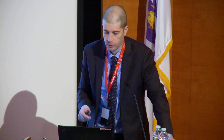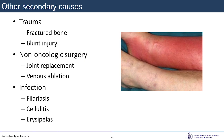Other causes of secondary lymphedema beyond breast cancer include trauma — seen after fractured bone, blunt injury, car accidents with pelvic injury even without fracture — and non-oncologic surgery including joint replacements, venous ablations, and varicose vein procedures. Infection is also a cause: filariasis involves direct injury to the lymphatic with infiltration, and we're learning more about the role of inflammatory and bacterial-specific mechanisms in cellulitis and erysipelas.